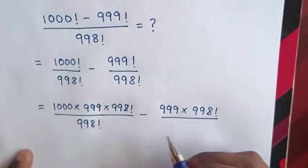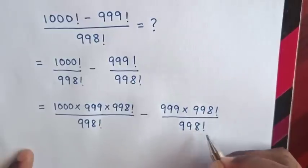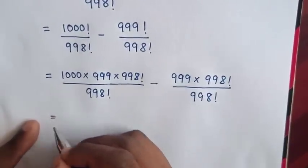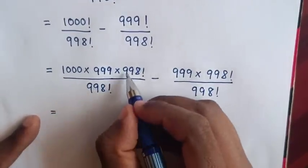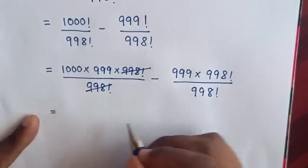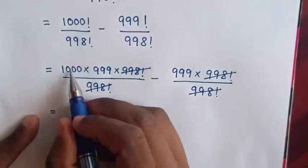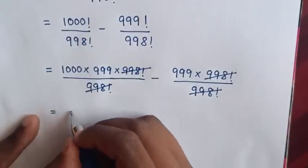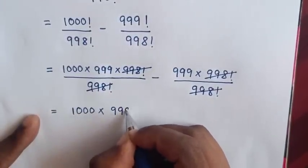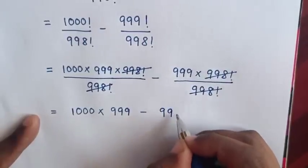Then to simplify, 998 factorial will cancel in the first term, and 998 factorial will also cancel in the second term. So it will be 1000 times 999 minus 999.